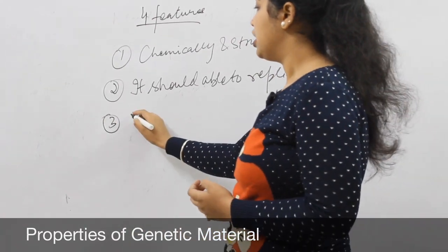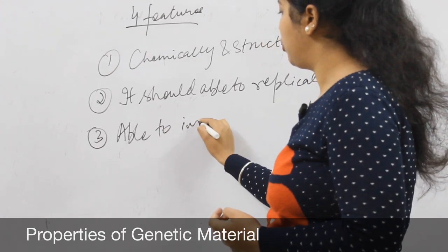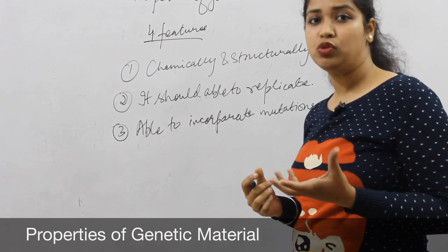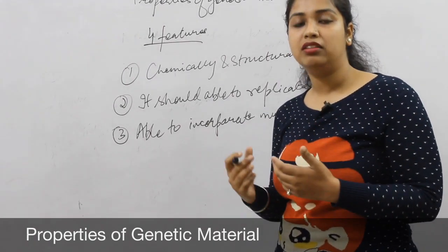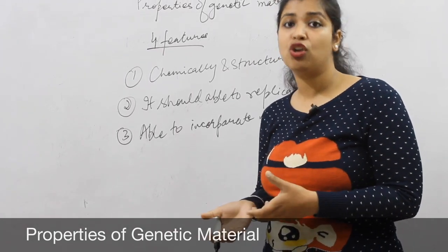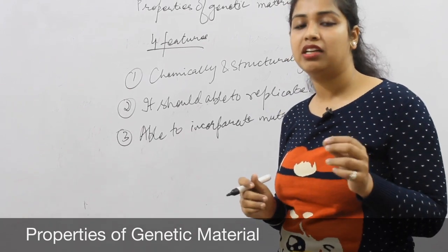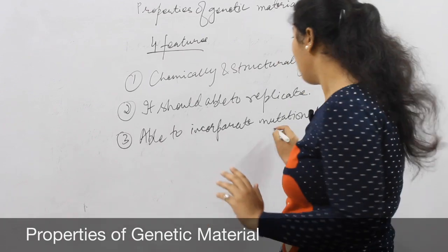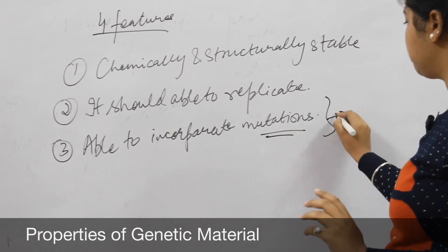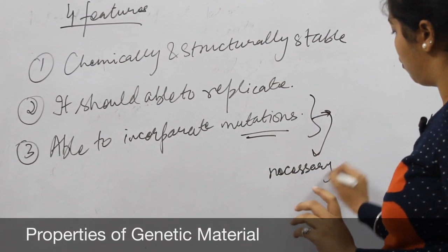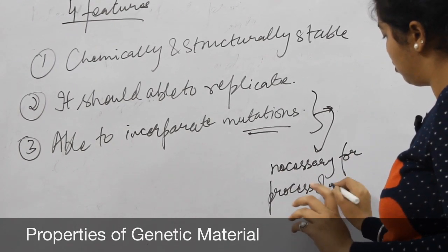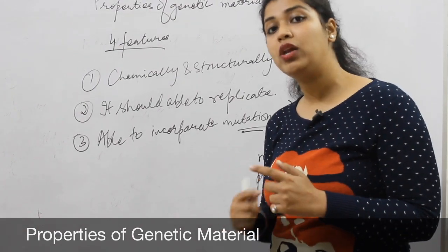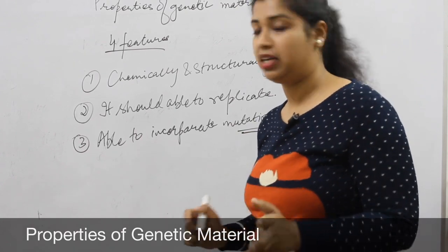The third feature is that it should be able to incorporate mutations. Mutations are slow, gradual changes — kuch major changes which can be beneficial or lethal — that accumulate over many years. Genetic material should be able to incorporate these mutations because they are necessary for the process of evolution. Generation mein changes aana bahut zaroori hai, and evolution will occur only if mutations are successfully incorporated into the genetic material.